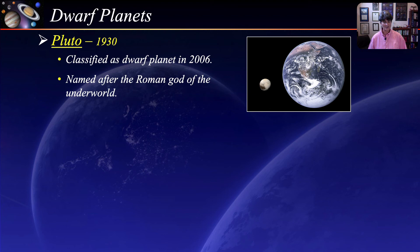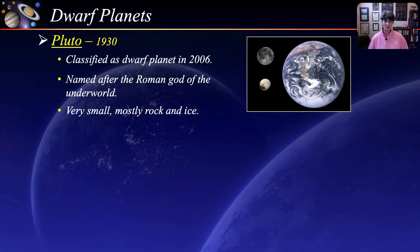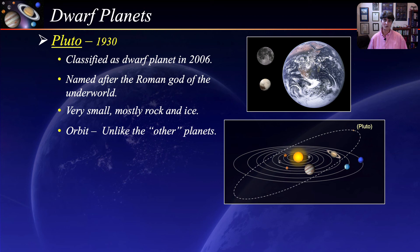Pluto is very small — about one-sixth the size of Earth and smaller than our Moon. It is mostly made of rock and ice, very different from the four outer planets that are large and gaseous. Pluto's orbit is also very different — it is much more inclined compared to the other planets and also more eccentric. On average, Pluto is 3.7 billion miles from the Sun and takes 248 years to complete one revolution around the Sun.